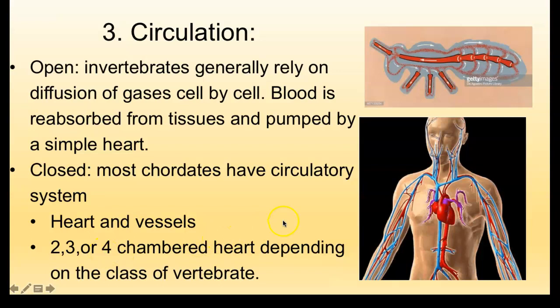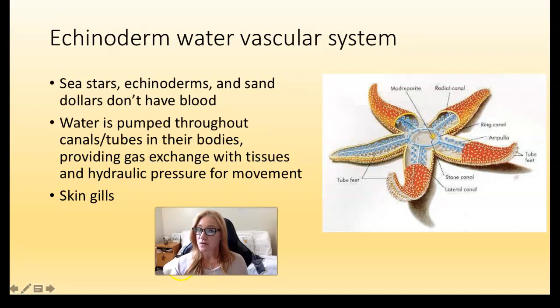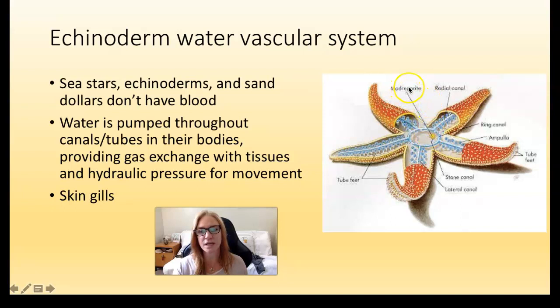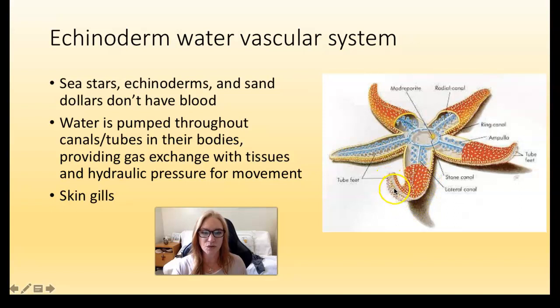Let's talk about echinoderms — the weirdos with the vascular system, and I love them. In terms of their circulatory system, they don't have blood — they use water. They pull water into their body through a little screen called the madreporite, which is pumped through a system of canals and tubes. They have a ring canal and radial canals going down each arm, and little tube feet, all filled with water. The water actually does gas exchange between the cells, and it's also how they move. They have skin gills embedded in their skin for the gas exchange part.